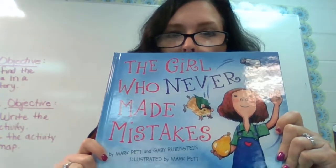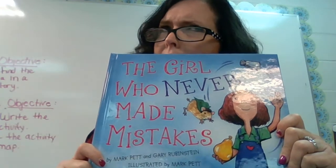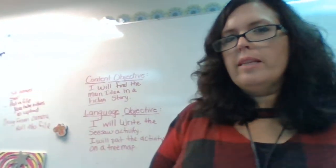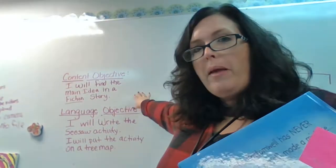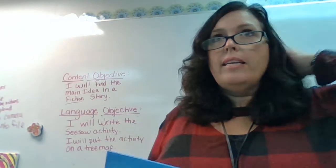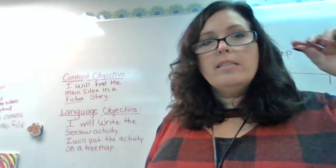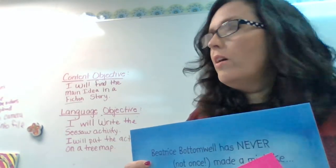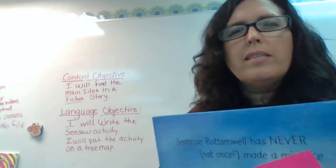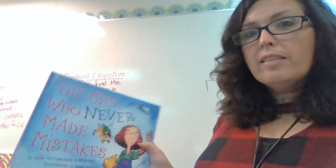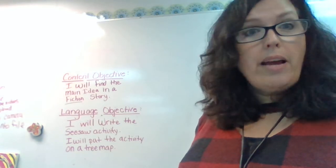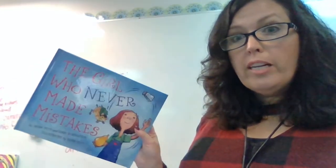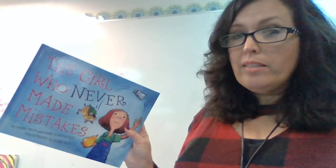So we're going to read about the girl who never makes mistakes — that's strange to me, but we're going to find out. What we're going to do with this book today is find the main idea of the story. Main idea is what the story is mostly about — that's what we try to figure out. Sometimes it's also the message the author is telling us. Lots of times main idea is done with non-fiction books, but we're going to use a fiction book today, and that makes it a little bit different.